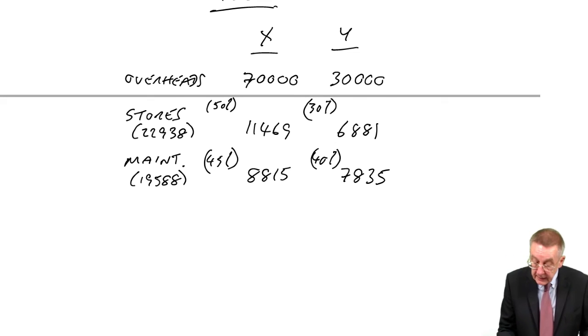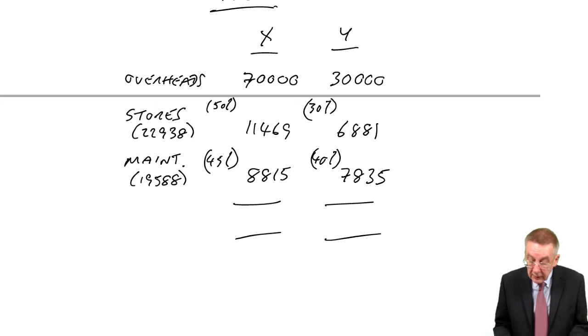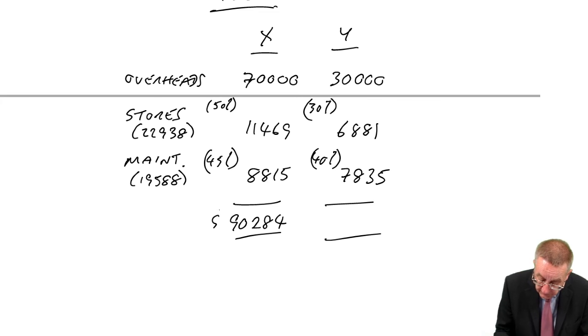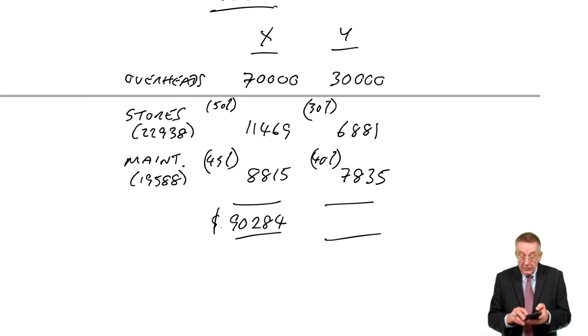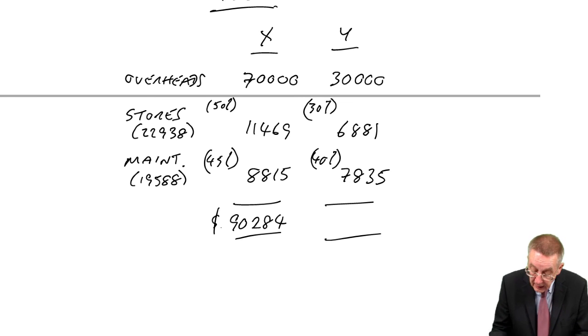And now we've got it. We end up with a total for X: 70,000, 11,469, 8815. 90,284. And what do we end up with for Y? 30,000, 6,881, 7,835. 44,716.